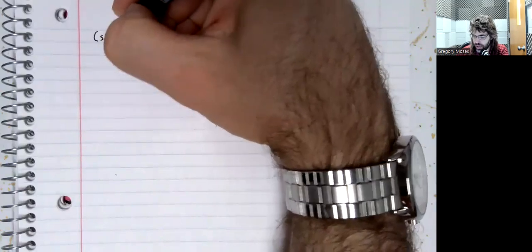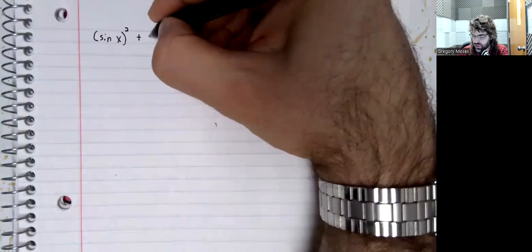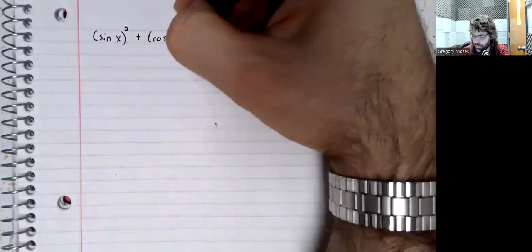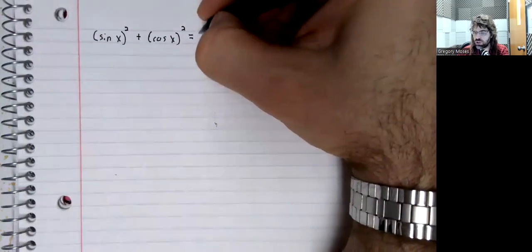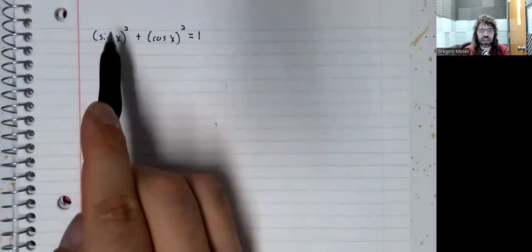It says that the sine of a number squared plus the cosine of a number squared equals one. But it doesn't get written like that.